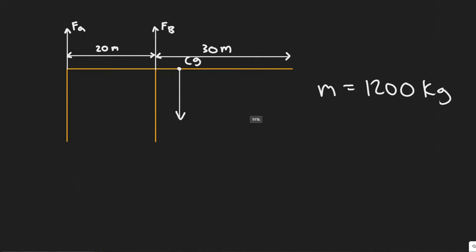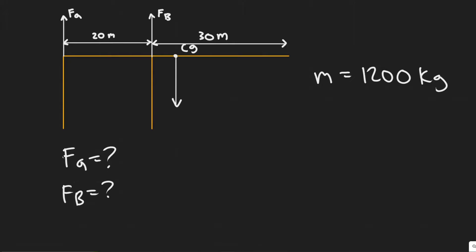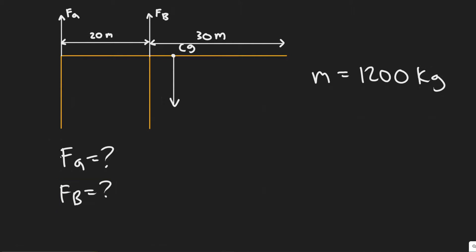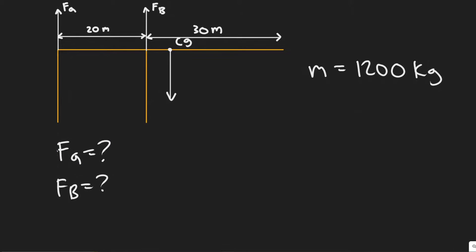What we're trying to find is Fa and Fb. We're going to solve this by doing two things: summing up the torque and summing up the forces. In order to solve for Fa, we'll sum up the torque. The formula for torque is torque equals force times distance times the sine of theta.